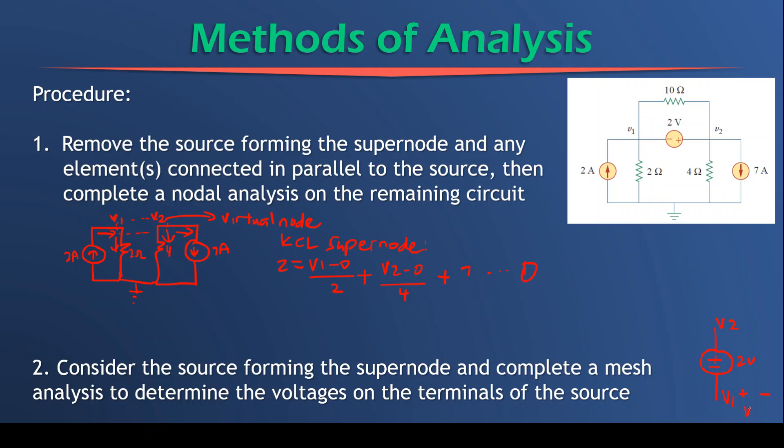it would probably sit as follows. It will be plus minus V1, and that will be plus minus V2. So if we move in that clockwise direction, we're going to say minus V1 minus 2 volts plus V2 gives us zero, which then leads to the equation V2 minus V1 is going to give us minus 2 volts. And that will be our second equation.